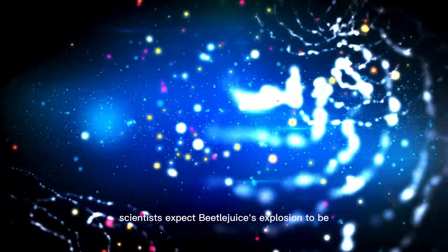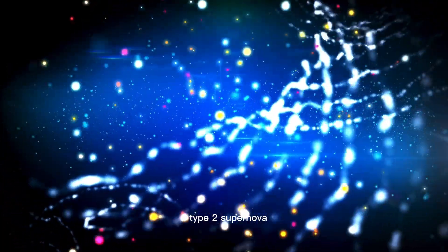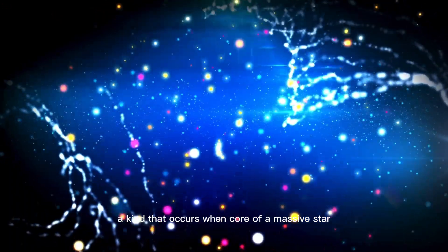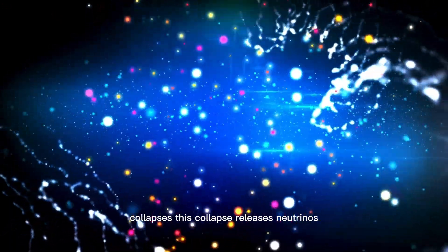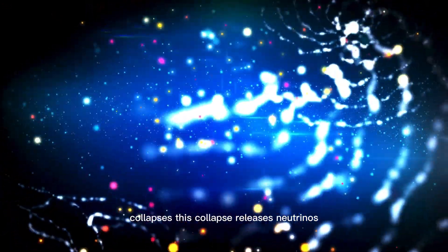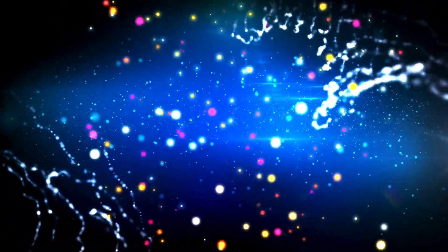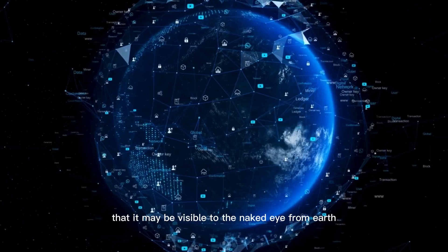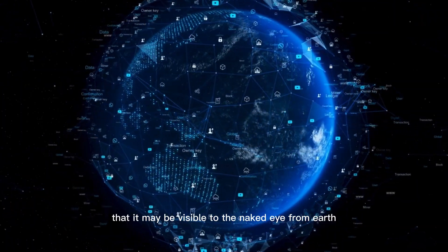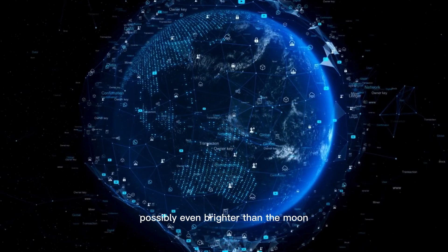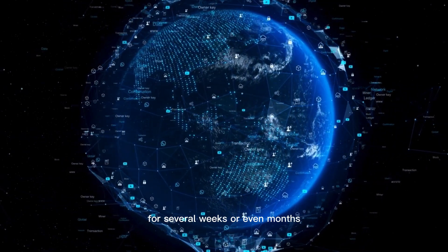Scientists expect Betelgeuse's explosion to be a Type 2 supernova, a kind that occurs when the core of a massive star collapses. This collapse releases neutrinos and high-energy radiation, forming a shockwave that tears the star apart. The supernova will be so luminous that it may be visible to the naked eye from Earth, possibly even brighter than the moon, for several weeks or even months.